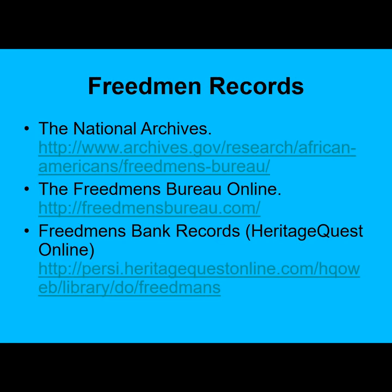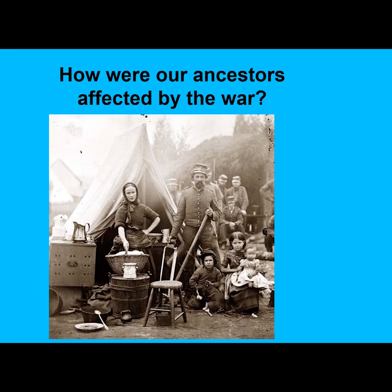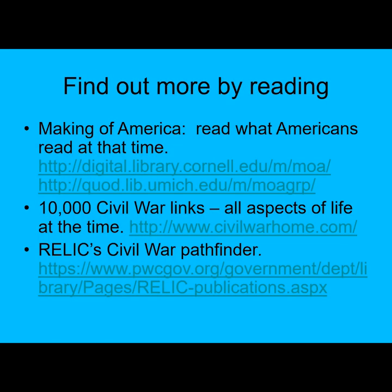The largest source of African American history for the Civil War period is the National Archives. The Freedmen's Bureau was created at the end of the war to help former slaves transition to being American citizens. Its bank records register their earliest savings accounts and provide details about their families. Find out more about what your ancestors read and how they lived using Cornell University's website and 10,000 Civil War links.